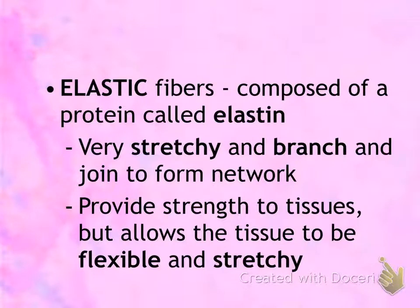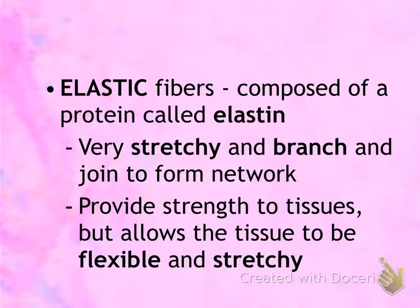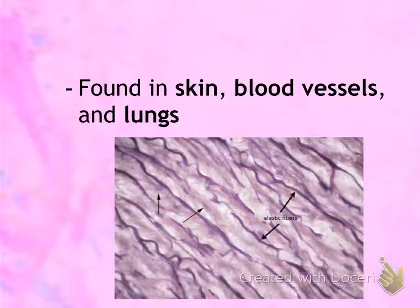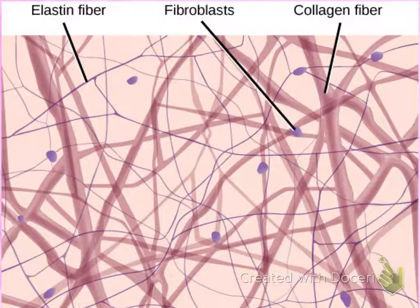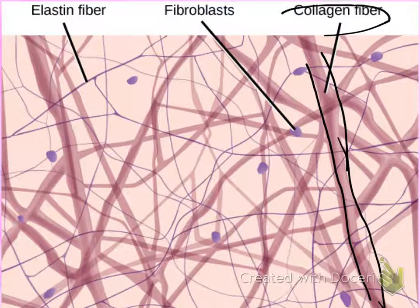A much thinner type of fiber is the elastic fiber, composed of a protein called elastin. Just like its name, elastic fibers are very stretchy. They branch, whereas collagen fibers run parallel. Because they branch and are much thinner, they are more flexible and allow for a lot of stretching. For example, the earlobe is cartilage that contains a lot of elastic fibers. Areas where you'll find elastic fibers include skin, blood vessels, and the vocal cords in your lungs.